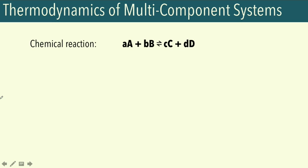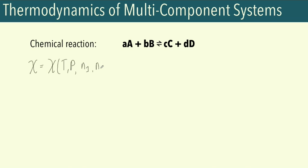Of course, these extensive properties will also be dependent on the number of moles of each component in the system. Say that we have some extensive property X, which is a function of temperature, pressure, and the number of moles of each component. For simplicity, let's say we have components one and two. To get the overall expression for how X changes with all its independent variables, we can write the total differential.